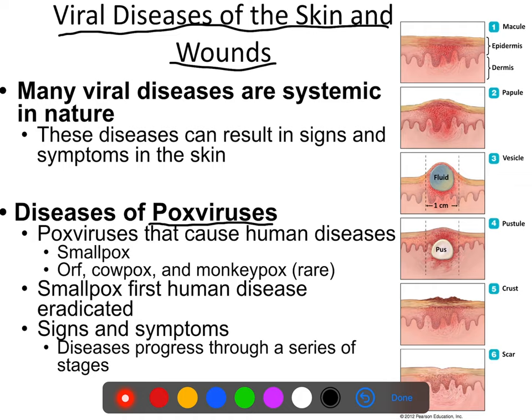Smallpox in humans is extremely deadly and extremely contagious — and also extremely gone. It's the first disease that has ever actually been eradicated by humans. We developed a vaccine against it, the vaccine was pretty much universally deployed, was extremely effective, and now smallpox does not exist in the wild. There was a lab in Russia that had some stores of smallpox for research.